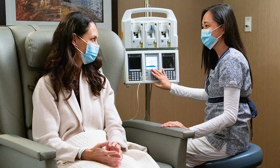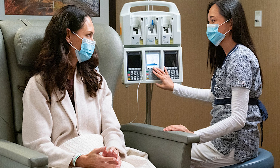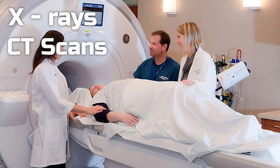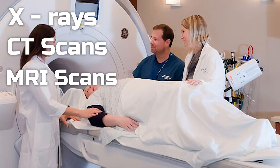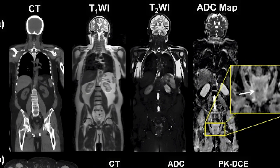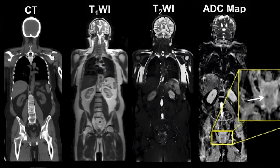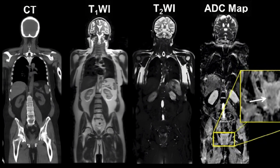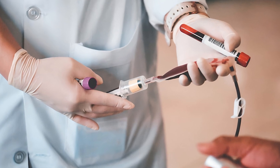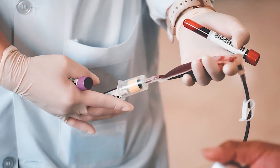Early detection and diagnosis are key to successfully treating cancer. Imaging tests such as X-rays, CT scans, and MRI scans can be used to visualize the internal structures of the body and identify any abnormalities or tumors. These tests can also determine the size and location of the tumor, as well as whether the cancer has spread. Laboratory tests can also be used to diagnose cancer — for example, blood tests can measure levels of certain substances in the blood that may indicate the presence of cancer.